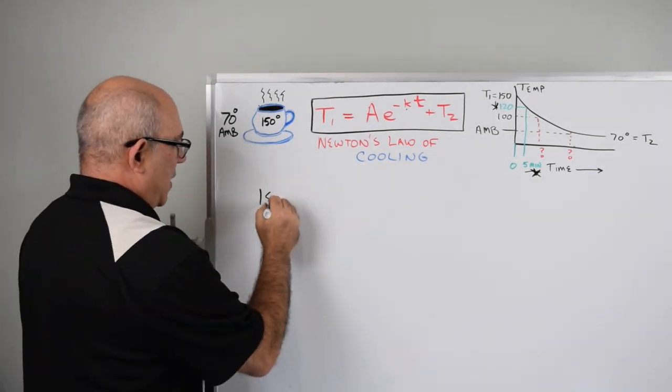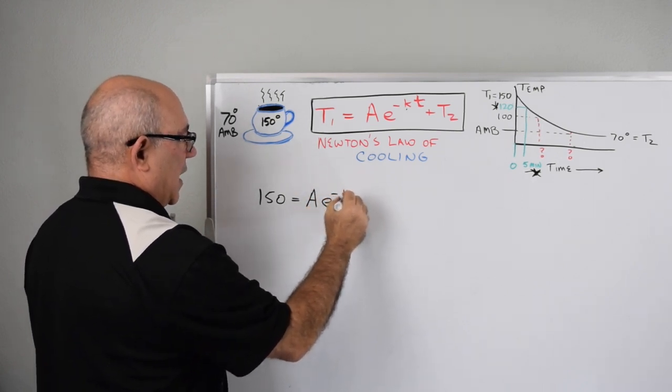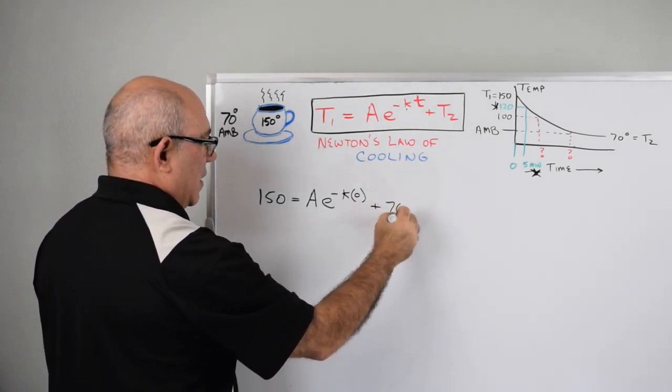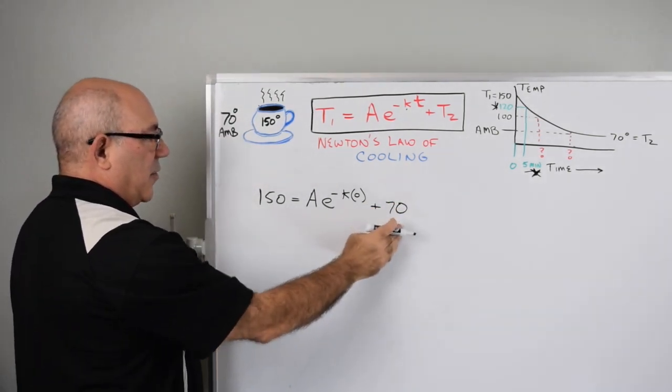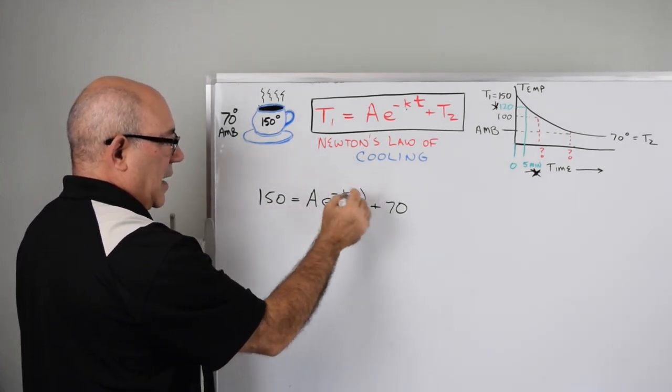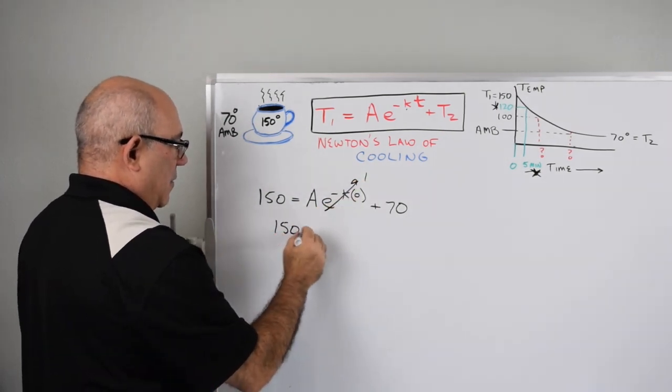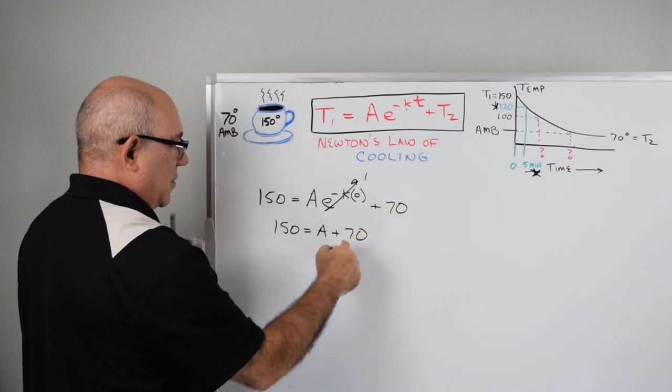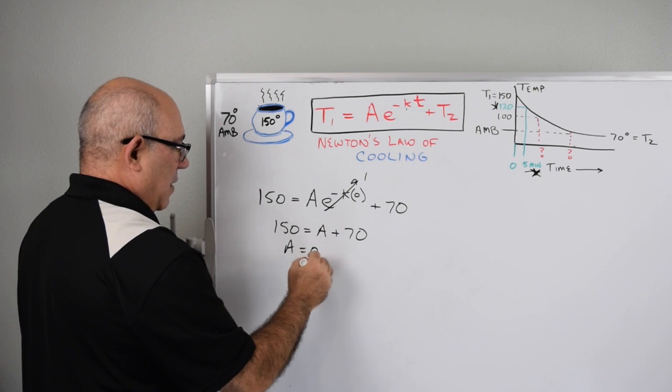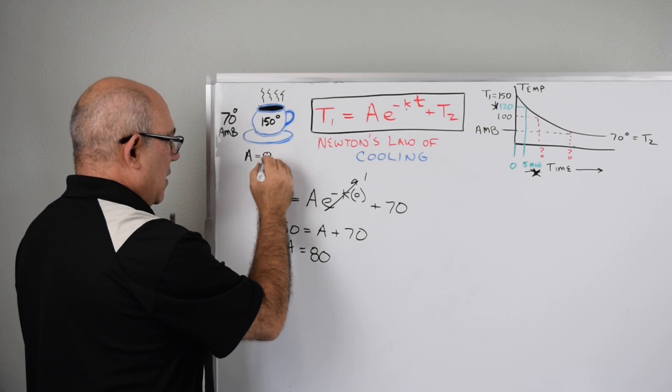We've got to find this A. We're going to leverage the fact that we know the initial temperature was 150 at time zero. If we take 150 equals A times e to the minus K of zero plus 70, we can now solve for A. Because e to the zero power is 1, we have 150 equals A plus 70. Subtract 70 from both sides and we get A equals 80.